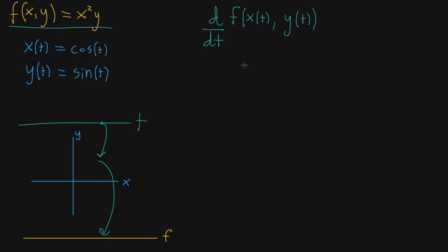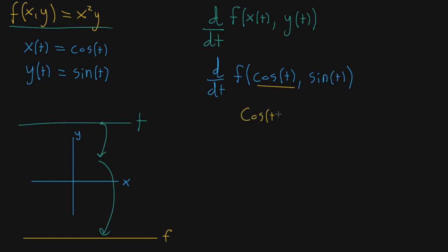Let's just start plugging things in. If I have f of x(t) and y(t), the first thing I might do is write f and instead of x(t), just write in cosine of t, since that's the function I have for x(t). And then y, we replace that with sine of t. I'm hoping to take the derivative of this. Then from there, we go to the definition of f: f(x, y) = x squared times y, which means we take that first component, cosine of t, and square it, then multiply it by the second component, sine of t.